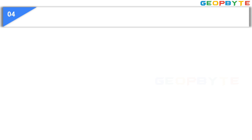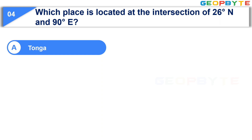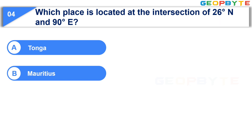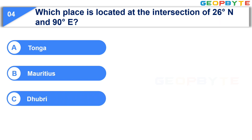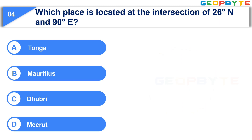Let us see the fourth question. Which place is located at the intersection of 26 degrees north and 90 degrees east? Option A: Tonga. Option B: Maury Tears. Option C: Dubri. Option D: Merit. Your time starts now. Your time is up and the correct answer is Option C: Dubri.